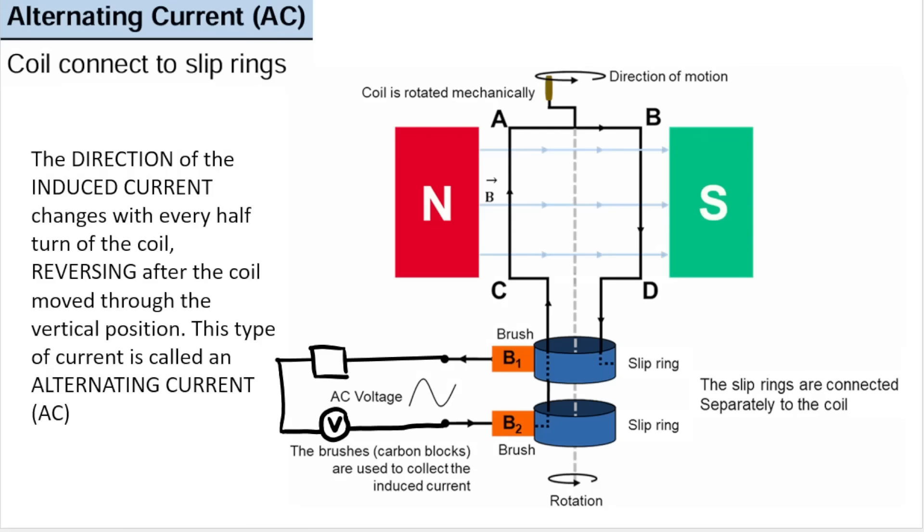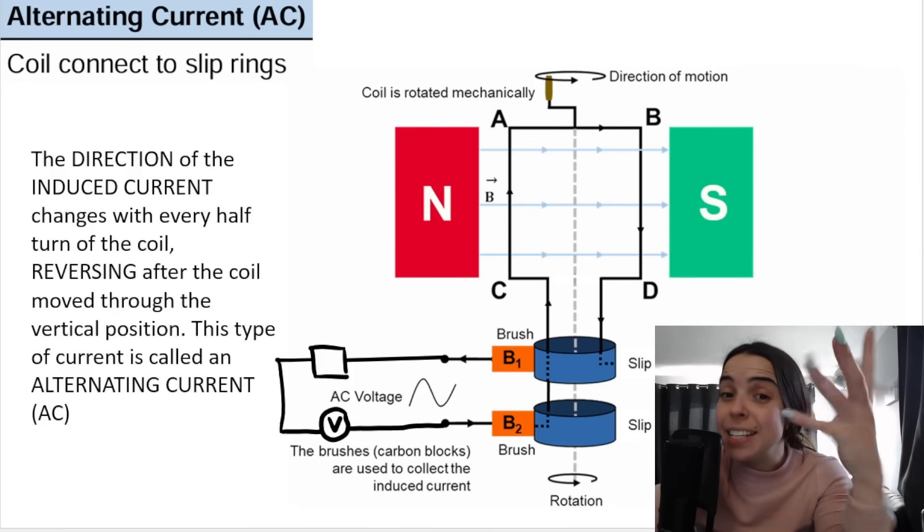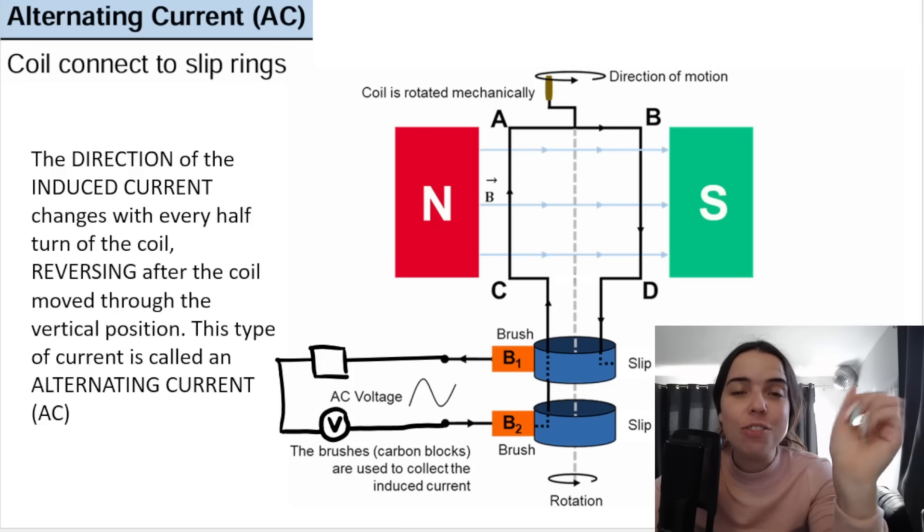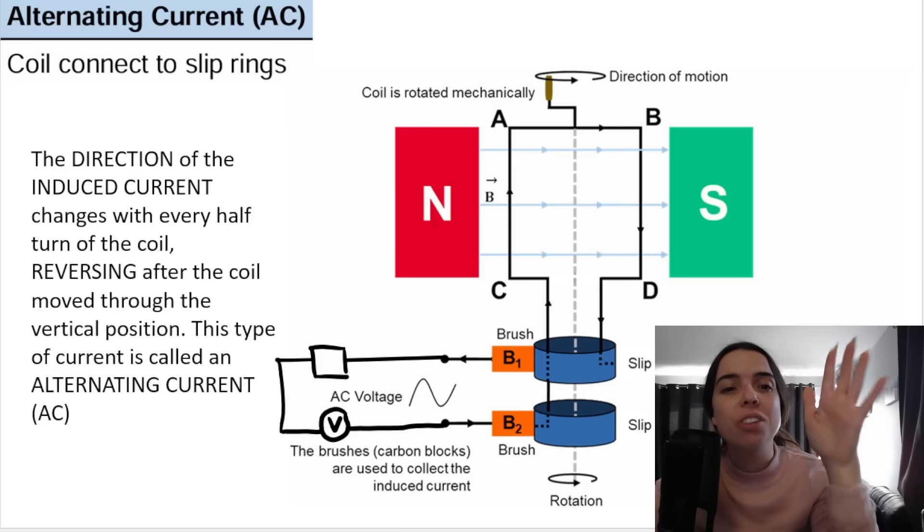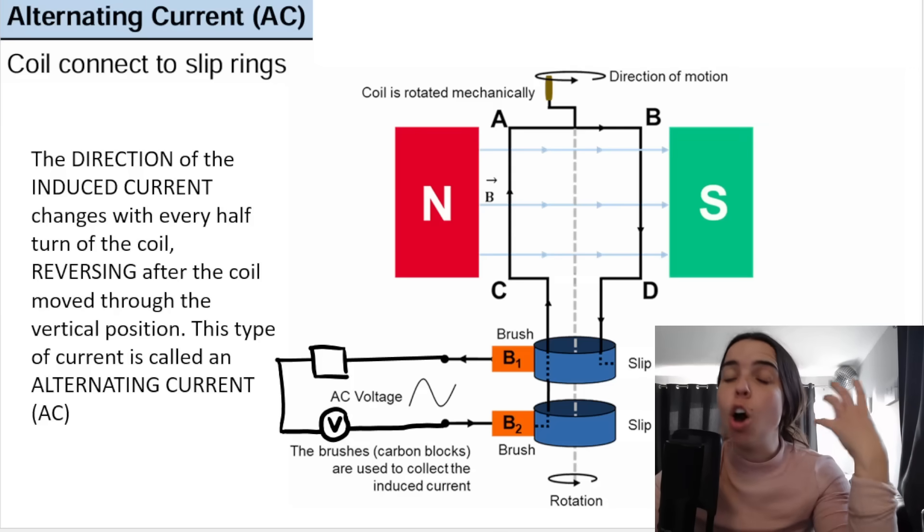First of all, just remember that the direction of induced current, so the current that is created in the coil, that direction of the current changes, it reverses, it alternates with every half turn of the coil. So it reverses after the coil moves through the vertical position.